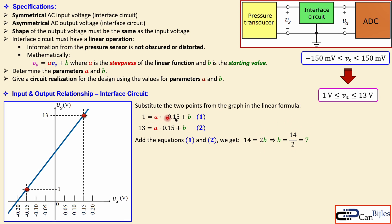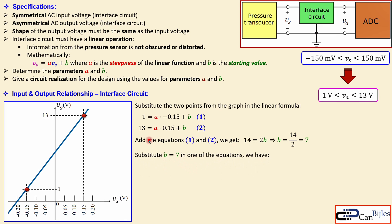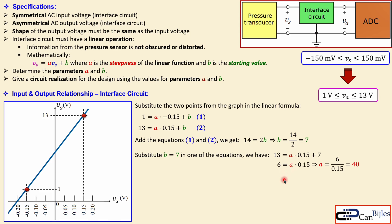Now that we have one unknown, we can use either equation to calculate A. Substituting B = 7 into Equation 2: 13 = A·(0.15) + 7. Subtracting 7 from both sides: 6 = 0.15·A, so A = 40. We now have our equation with values A = 40 and B = 7.